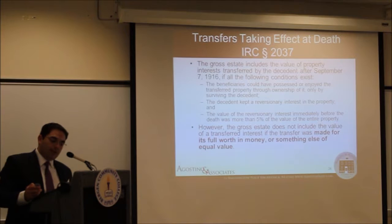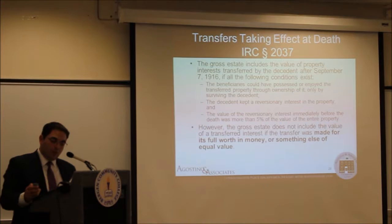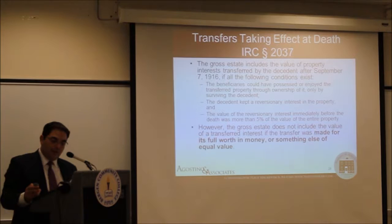Transfers taking effect at death. The general rule is that the gross estate will include the value of property interest transferred by the decedent if the following conditions exist: one, the beneficiaries could have possessed or enjoyed the transferred property only by surviving the decedent; two, the decedent kept a reversionary interest in the property; and three, the value of the reversionary interest immediately before death was more than 5% of the value of the entire property.